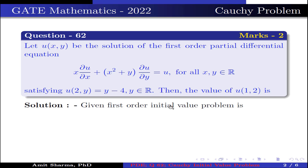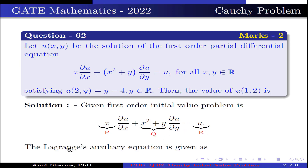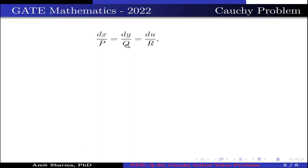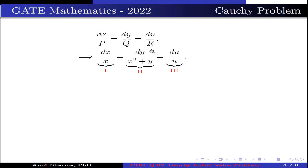The given first order initial value problem is x·(∂u/∂x) + (x² + y)·(∂u/∂y) = u. Here x is represented by P, x² + y is represented by Q, and u is represented by R. Now the Lagrange's auxiliary equation is dx/P = dy/Q = du/R. Substituting the values of P, Q, R we get dx/x = dy/(x² + y) = du/u. This is labeled as equation 1, equation 2, and equation 3.